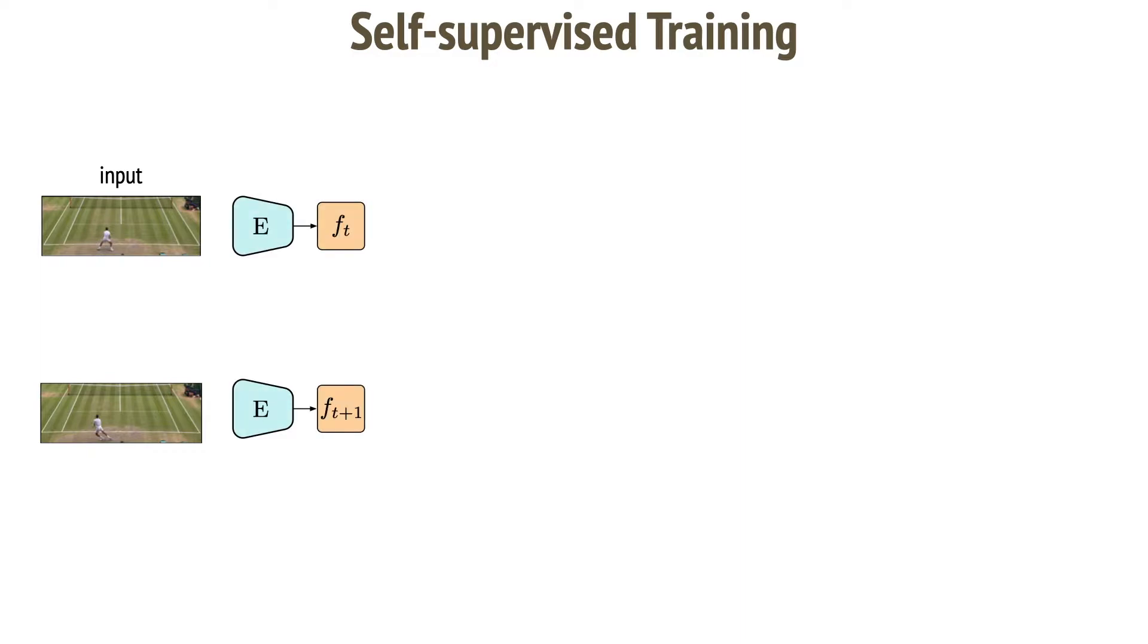How to train such a model without any labels? Given two consecutive frames, we first embed them using an encoder network to obtain image features. Some action happens between these two frames, and the action network seeks to identify which action exactly. After the action is identified, the future frame is fully determined by the feature embedding of the previous frame plus the identified action.